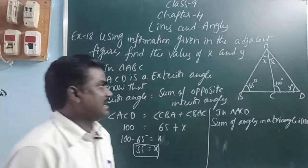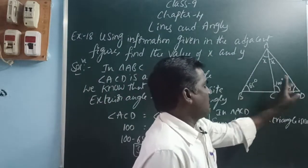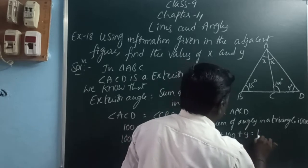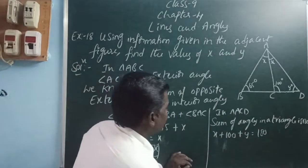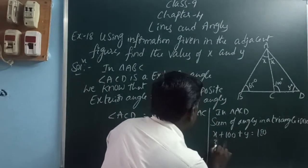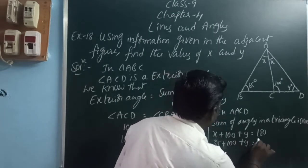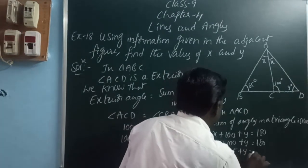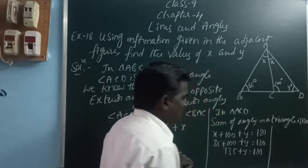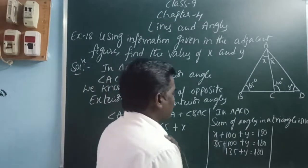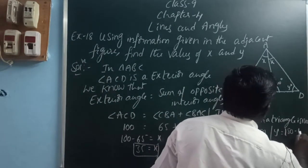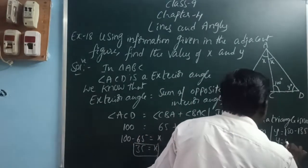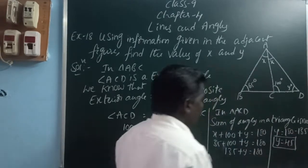In triangle ACD, the angles are X, 100, and Y. So X plus 100 plus Y equals 180. X is 35, so 35 plus 100 plus Y equals 180, giving 135 plus Y equals 180. Therefore Y equals 180 minus 135, which is 45. The value of Y is 45.